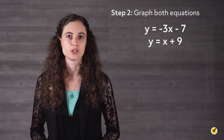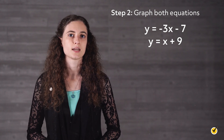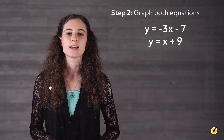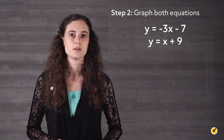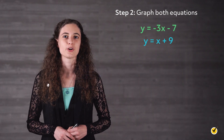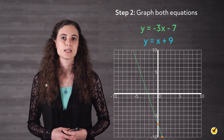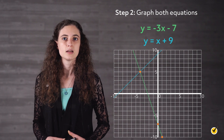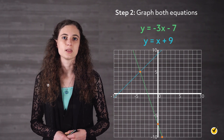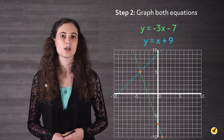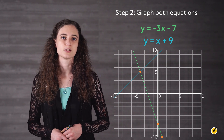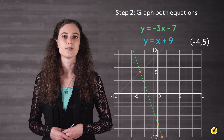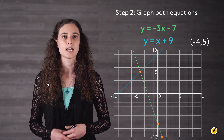Step two is to graph both equations. For the first equation, y equals negative 3x minus 7, the value negative 3 represents the slope of the line and the value negative 7 represents the y-intercept. With these two pieces of information we are able to build a line. Now let's graph the second equation on the same coordinate grid. Now we have both equations graphed, so we are ready for step three. Let's locate the ordered pair where the lines meet. We can see clearly that the lines intersect at the point negative 4, 5. So the solution for this system of linear equations is negative 4, 5.